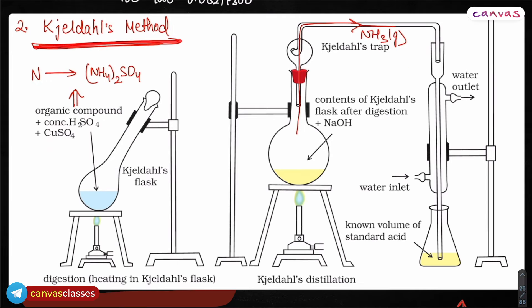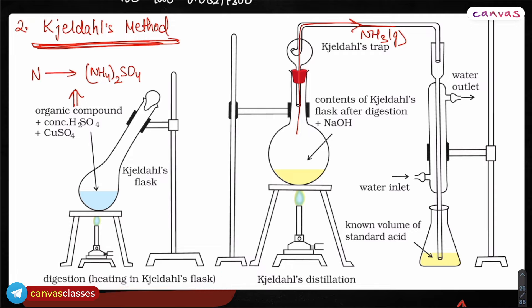Next is Kjeldahl's method, which is even more important. Kjeldahl's method is also used to estimate nitrogen only — it is a method for the estimation of nitrogen only. But it has two parts: first is digestion, and after that Kjeldahl's distillation.